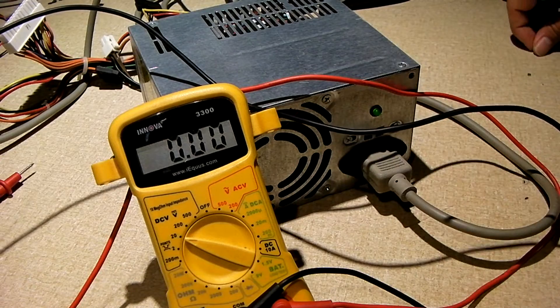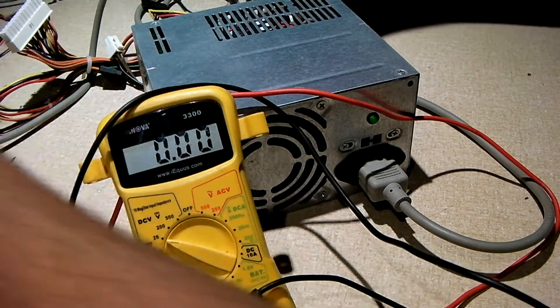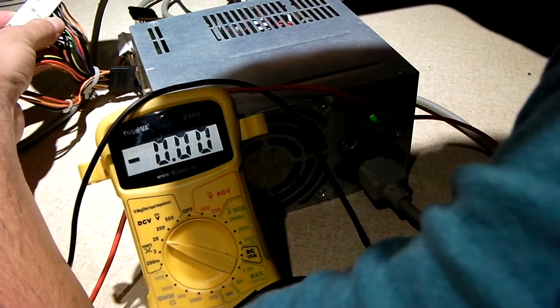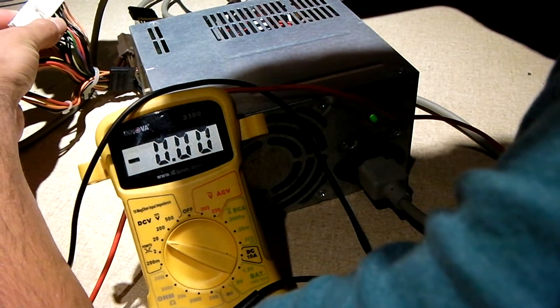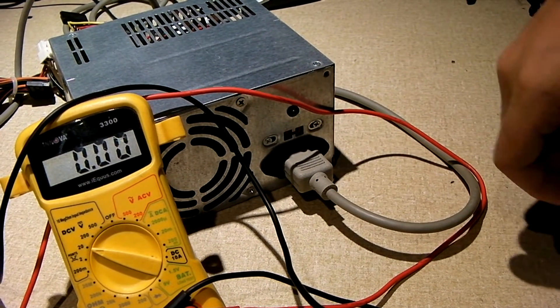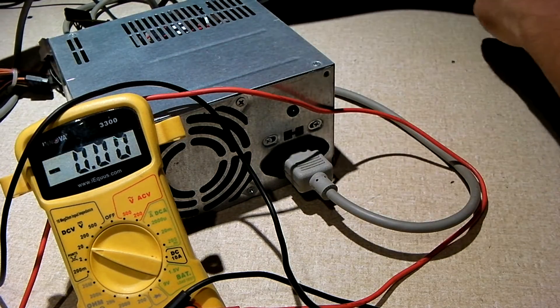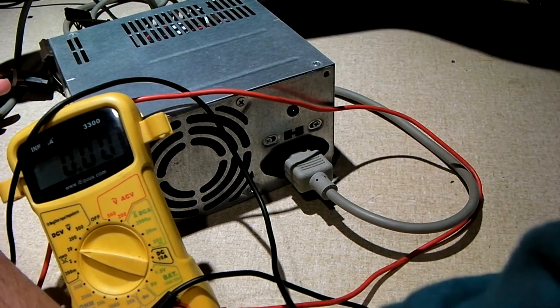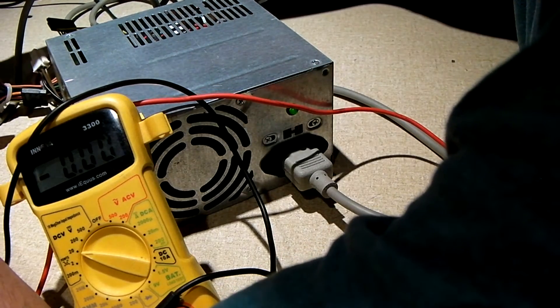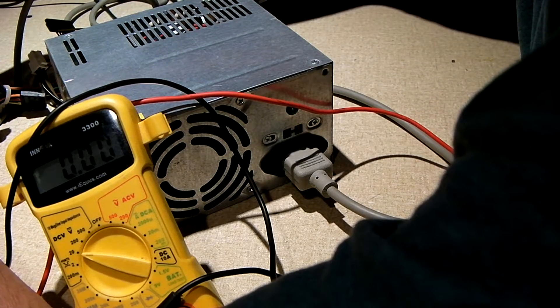I'm going to power up the power supply. Observe what happens to the little green LED on the back. As you see, the light is out. I'll demonstrate that again since I knocked my hand into the thing by mistake. When it's off, again, it lights up, but when the power supply is switched on, it goes out.